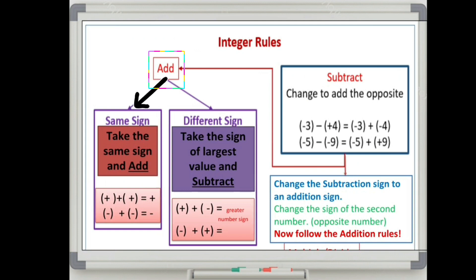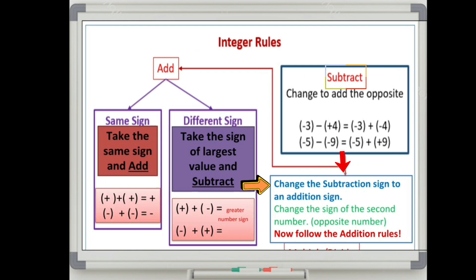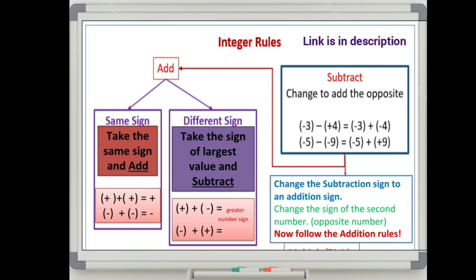When you are adding same sign integers, take the same sign and add them. When you have different sign integers in addition, take the sign of the largest value and then subtract. For subtraction: change the subtraction sign to an addition sign, then change the sign of the second number to its opposite, then follow the addition rule.